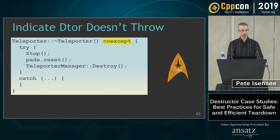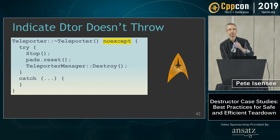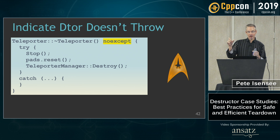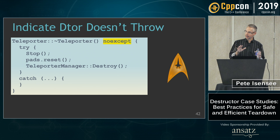Question: if stop throws, then reset and destroy will not be executed. That seems problematic. Normally I would identify the function that can throw and wrap that specifically, making sure all the correct functions do get called.